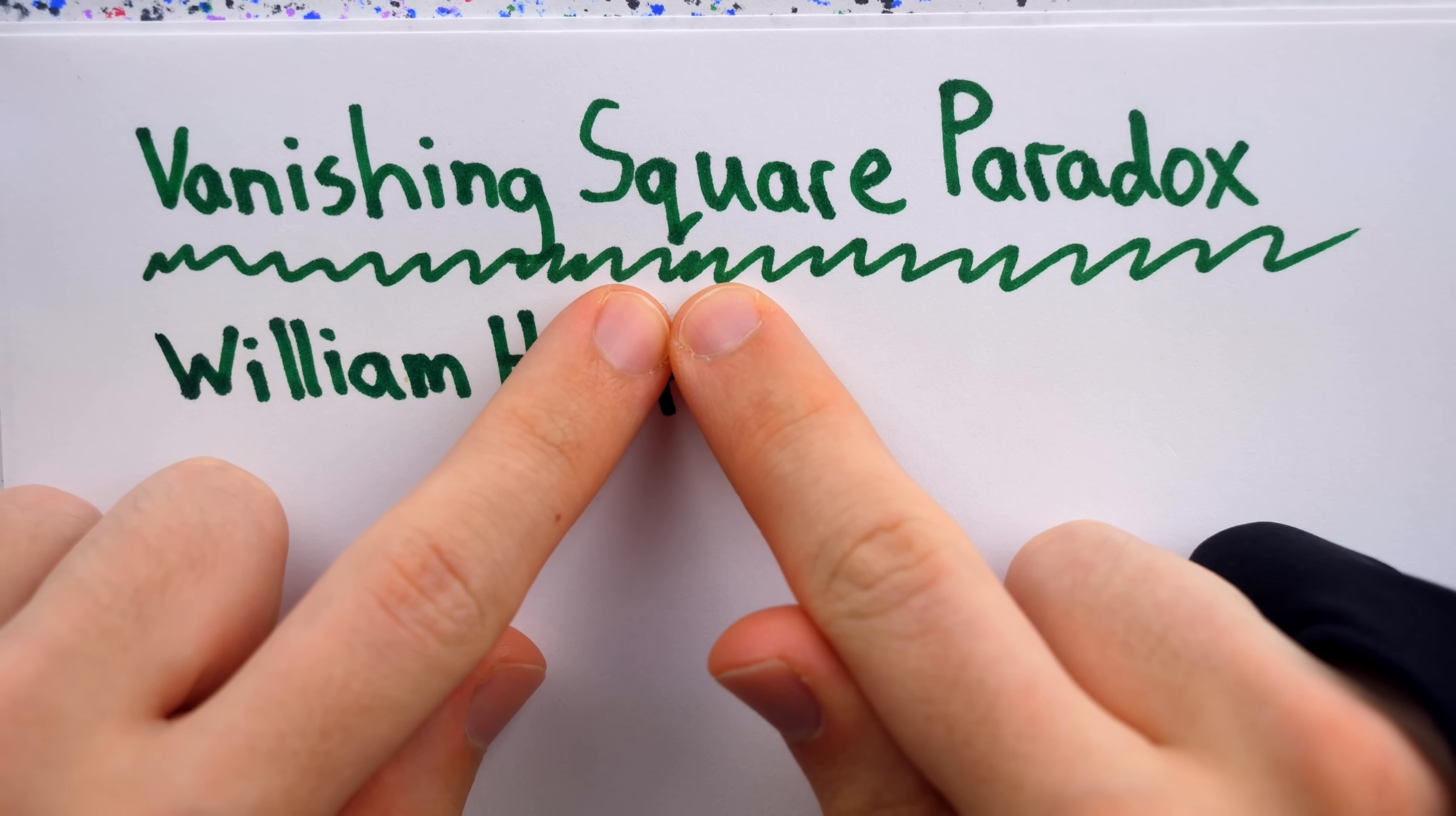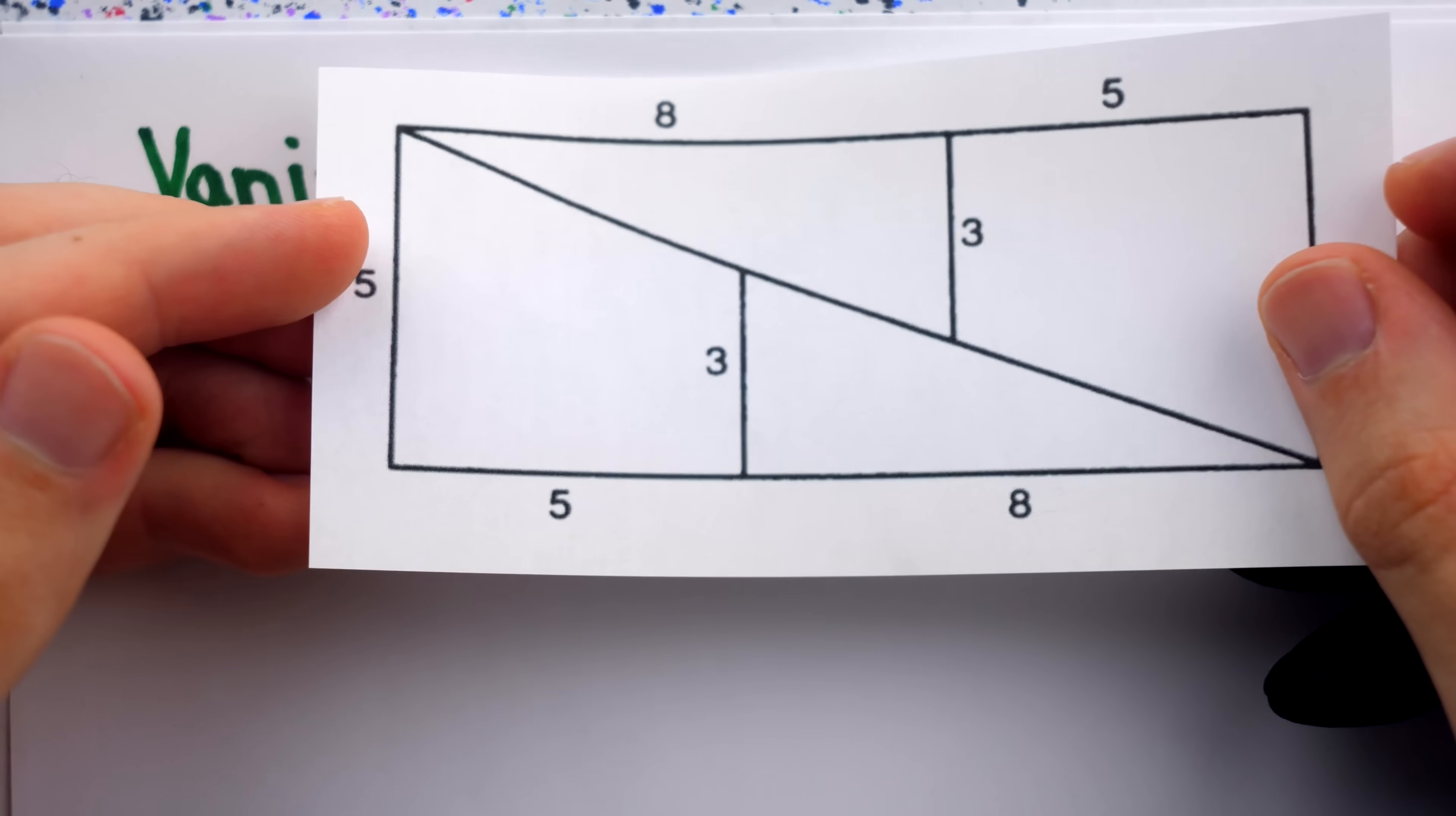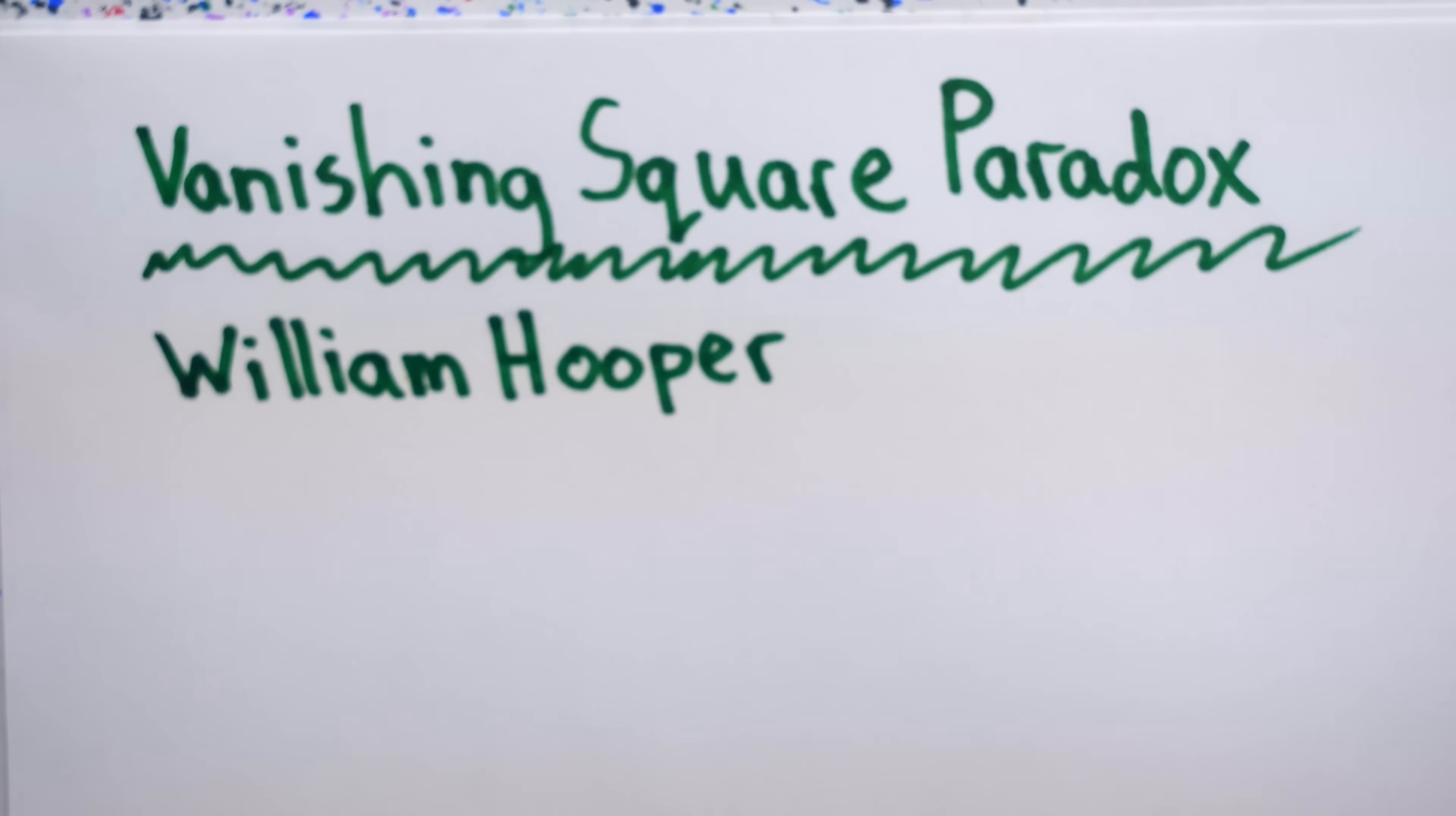Of course, while they're commonly called vanishing square paradoxes, in this first presentation, it's more like a materializing square, since the extra square unit, 64 to 65, seemingly comes from nowhere.